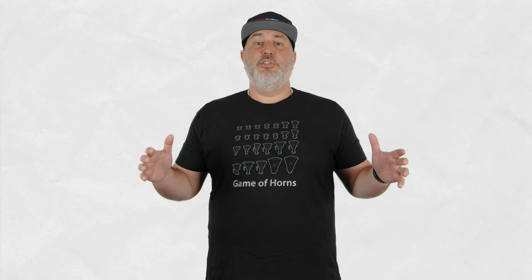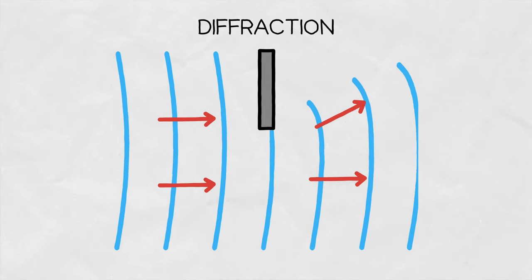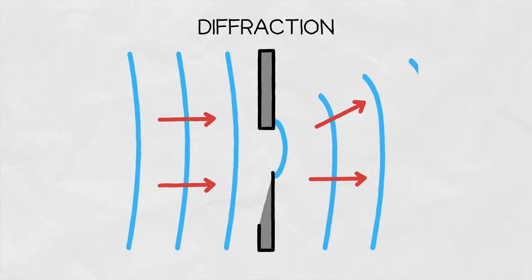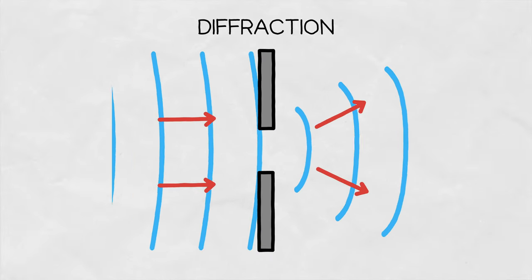This is particularly useful when explaining our next concept, diffraction. Diffraction is the bending of waves around obstacles or the spreading of waves when they pass through narrow openings. Using the Huygens principle, this can be visualized like this.